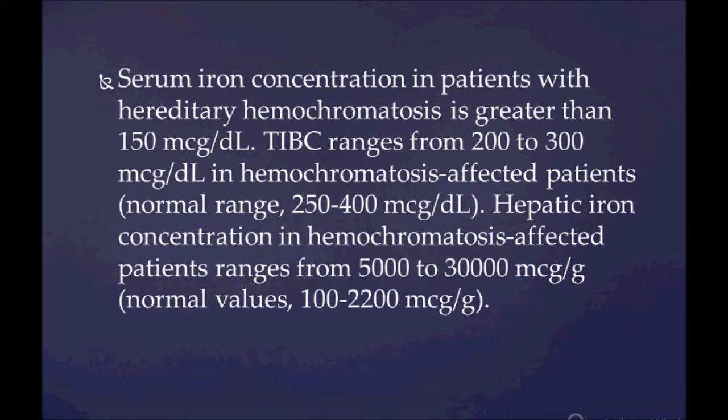Serum iron concentration in hemochromatosis is greater than 150 micrograms per deciliter. TIBC ranges from 200 to 300 in affected patients. Hepatic iron concentration in hemochromatosis ranges from 5,000 to 30,000 micrograms, compared to a normal value of 100 to 2,200 micrograms.